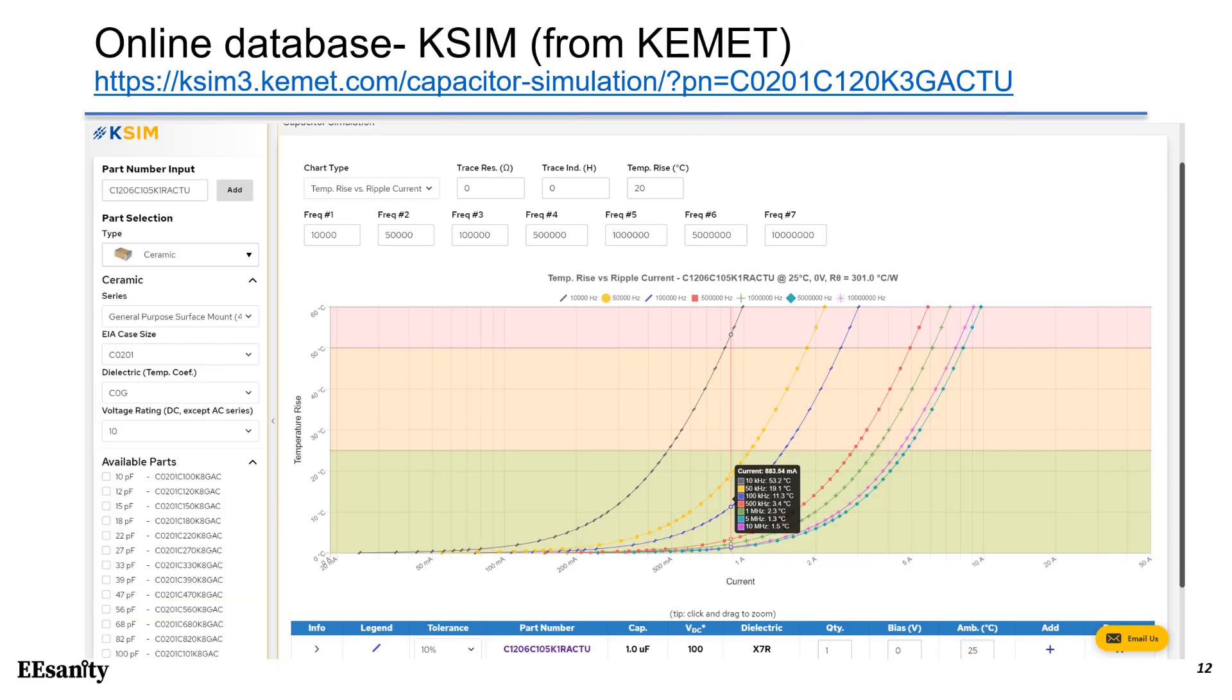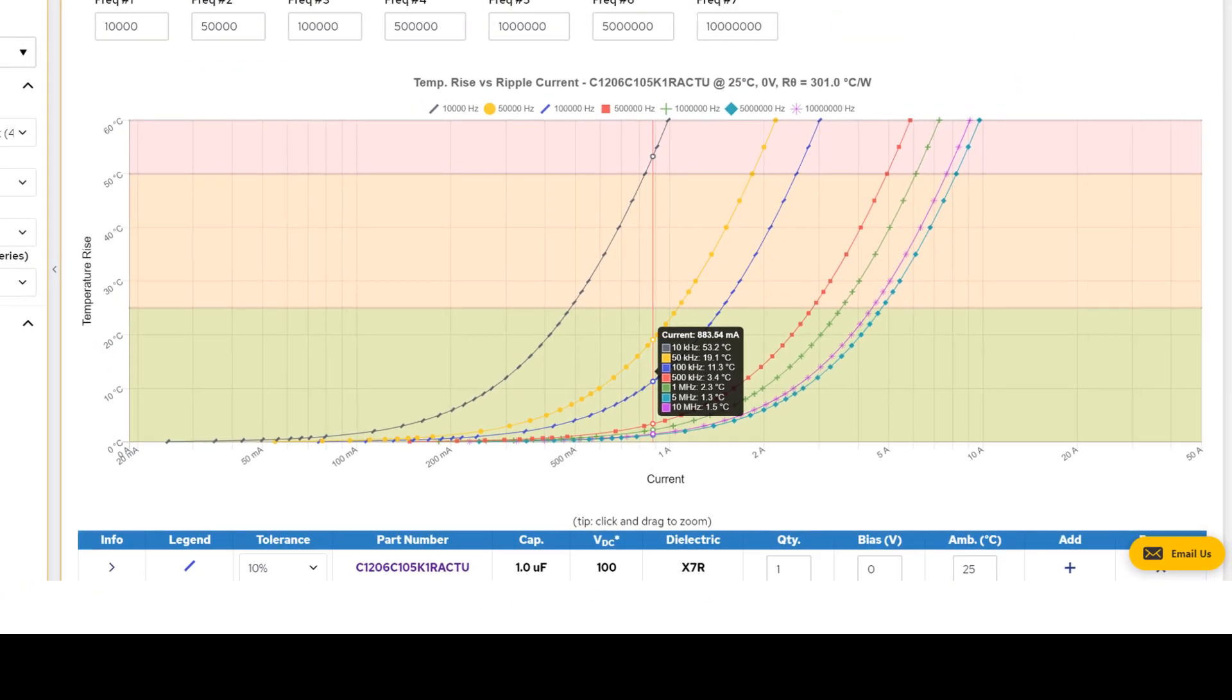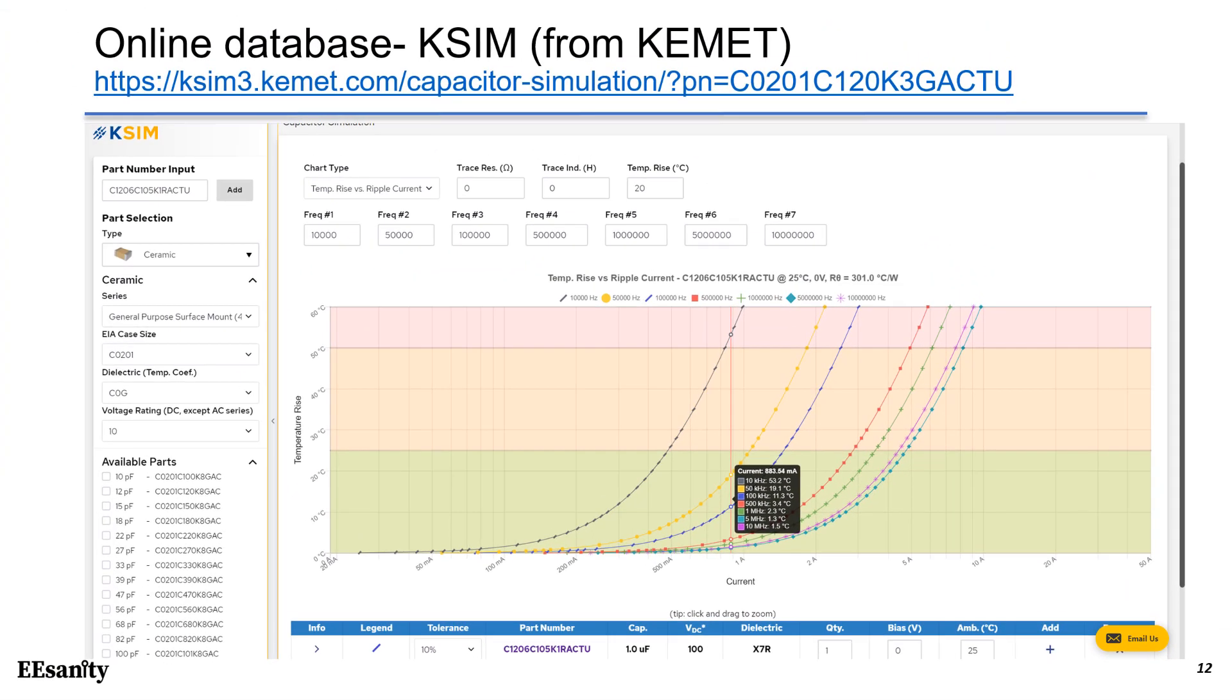From KMET, we can see the online database, so-called KSIM. It gives you the current versus temperature rise, which is a very convenient tool. For example, if we draw the curve here, we can see the temperature rise at different frequency. Basically, if the frequency is low, you have more temperature rise. You are welcome to try it by yourself.